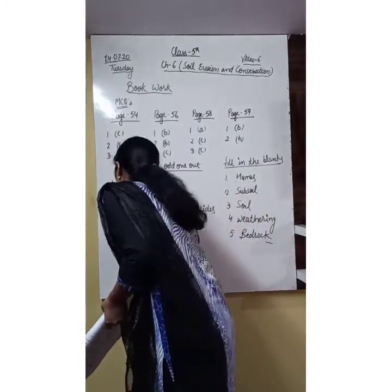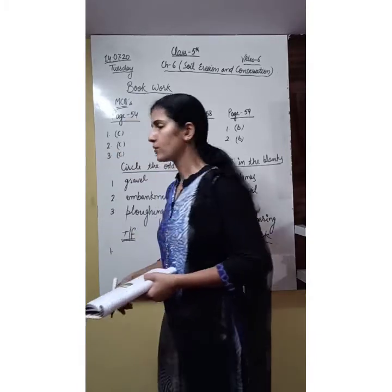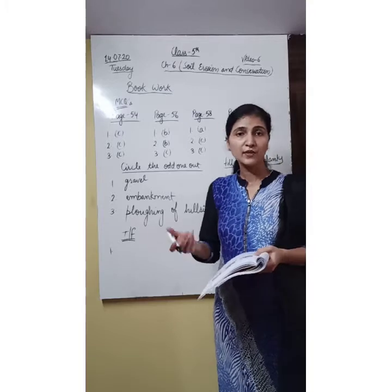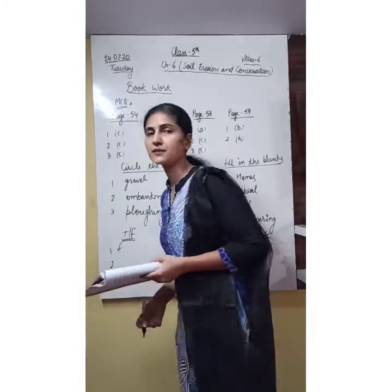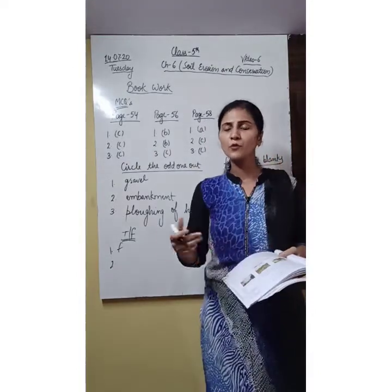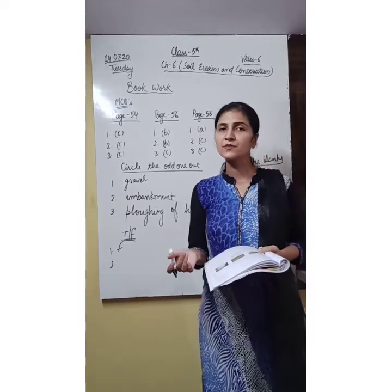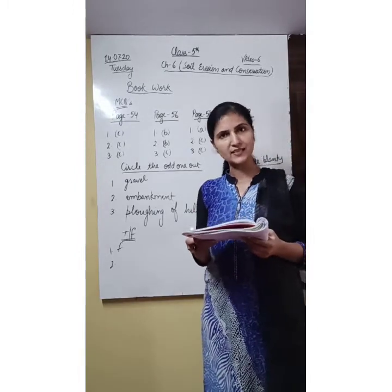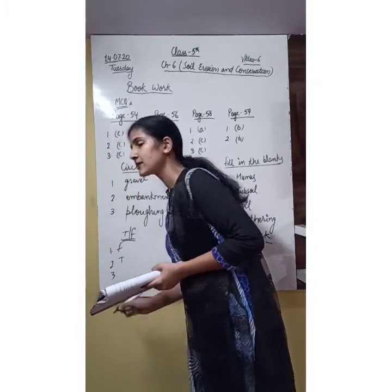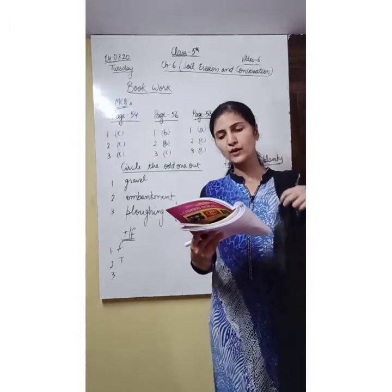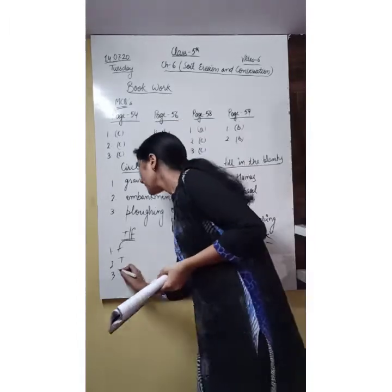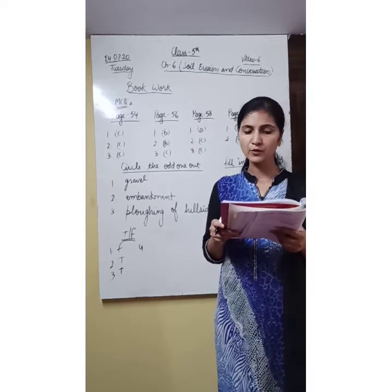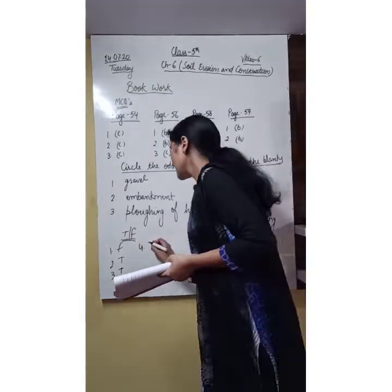Now next is true or false. First: we do not depend on soil — false, because we are dependent on soil for many things: cultivation, growing plants, and walking. Next: step farming reduces soil erosion — true, it is a process for soil conservation. Next: flowing water erodes soil on the river banks — yes, that's why we build embankments to stop soil erosion. The protection against soil erosion is called soil conservation — true, it is the opposite of soil erosion.